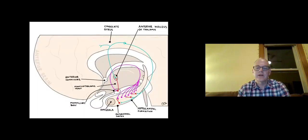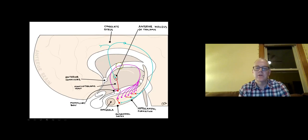Here's a student-created drawing showing Papez circuit. From the hippocampus, we have the columns of the fornix going down to the mammillary body, then up to the anterior nucleus of the thalamus, then up to the cingulate, and back down to the hippocampus again.